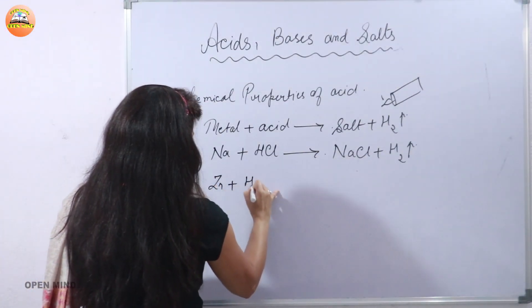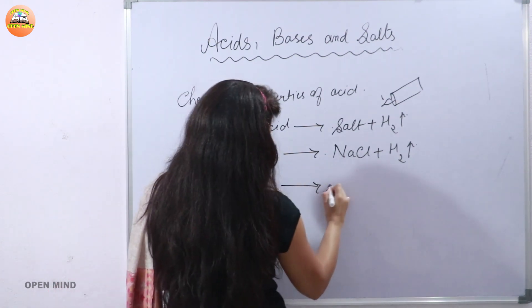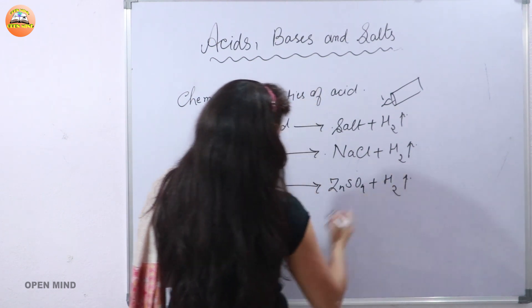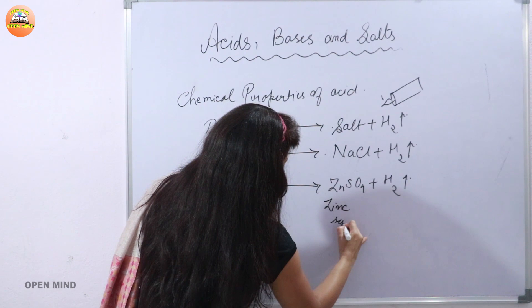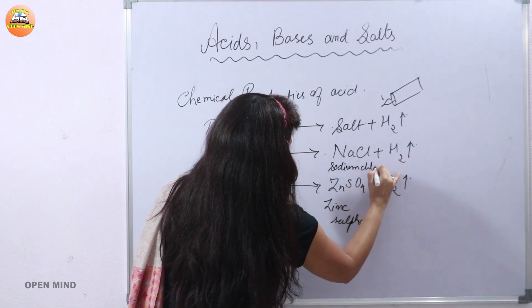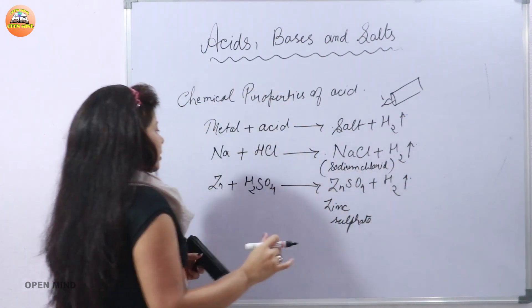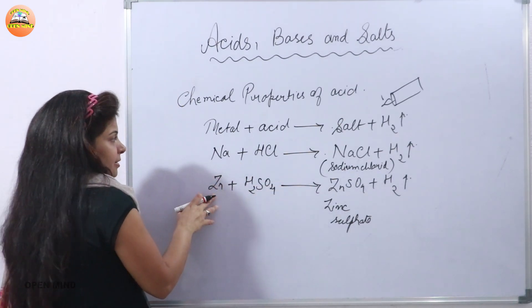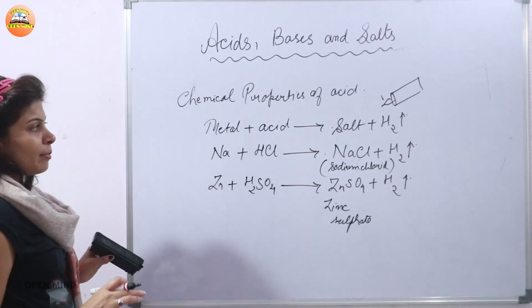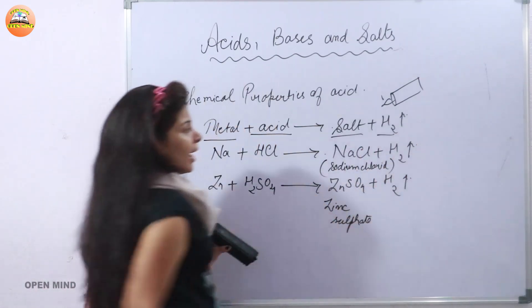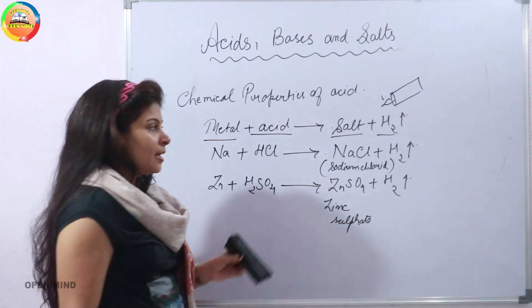Take another example: Zn plus H2SO4 gives you ZnSO4 plus H2. ZnSO4 is zinc sulfate and NaCl is sodium chloride. HCl is hydrochloric acid and H2SO4 is sulfuric acid. So the common property is: metals react with acid to give their respective salt and liberate hydrogen gas.